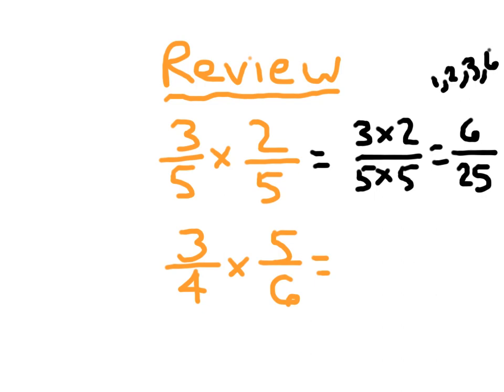For our other problem, we have 3 times 5. And we have 4 times 6. 3 times 5 is 15. And 4 times 6 is 24. So we have 15 twenty-fourths.